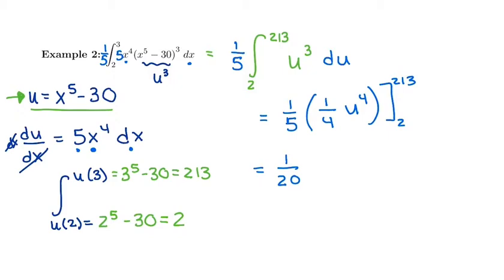1 over 20 times 213 to the 4th minus 1 over 20 times 2 to the 4th. But how I usually enter it is I just keep that factor out front. Plug in my upper bound minus my lower bound.